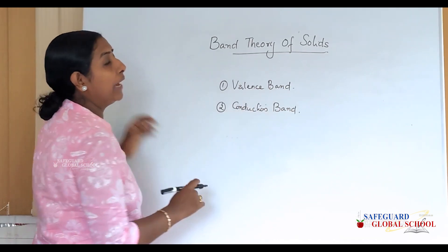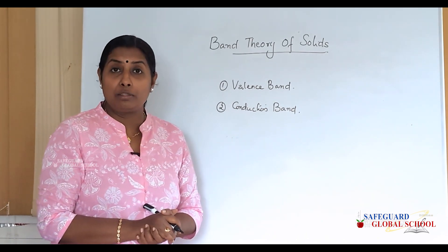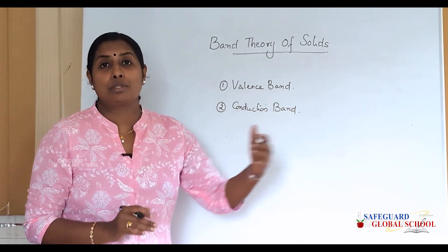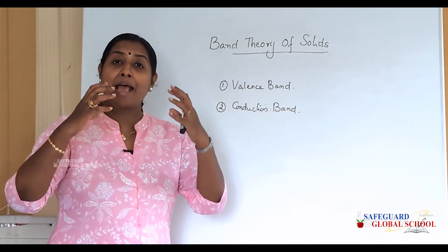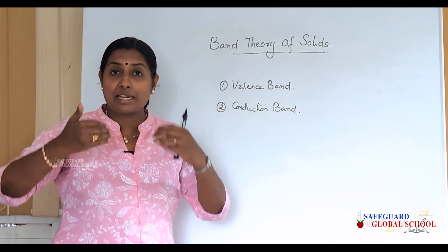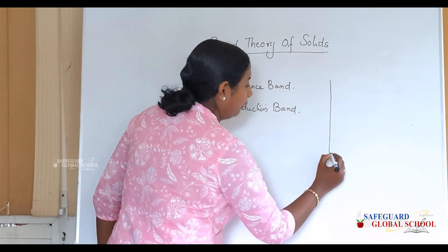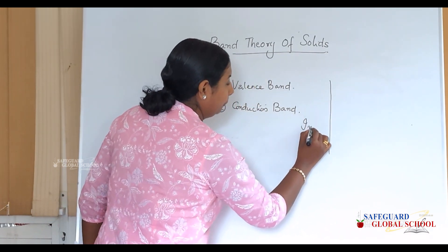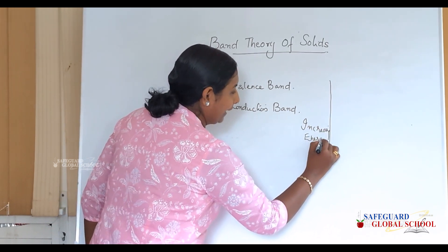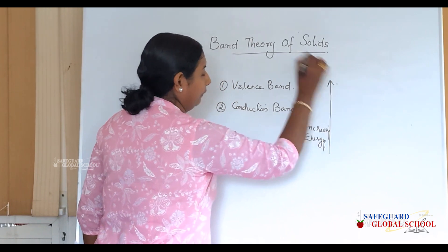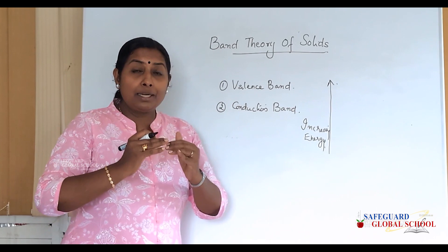The valence band consists of the energy levels of valence electrons. Valence electrons have lesser energy, so the valence band always lies at a lower energy level. When we draw a solid and note it with increasing energy, the valence band consists of numerous electronic levels.